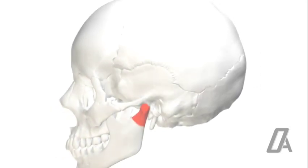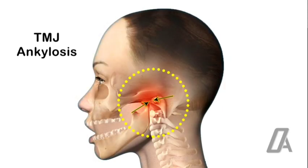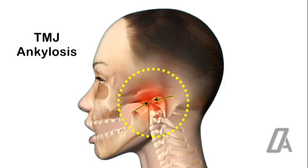Contrary to the old belief, it is now found that the condylar cartilage contributes little, if any, to the growth and does not act as primary growth center. In patients with ankylosis of the TMJ, mandible is found to grow to normal length.